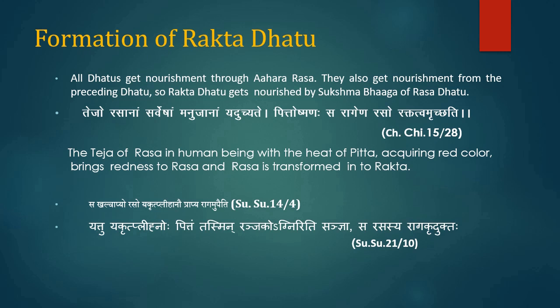Sharangdar has also mentioned that the Pith which resides in the liver converts Rasa into Rakta, i.e. Ranjak Pith. The entire nutrients required for the synthesis of blood cells are taken from Rasa Dhatu. Liver synthesizes heme, clotting factors and proteins of plasma, and nutrients like vitamin B12 and folic acid are stored in the liver.